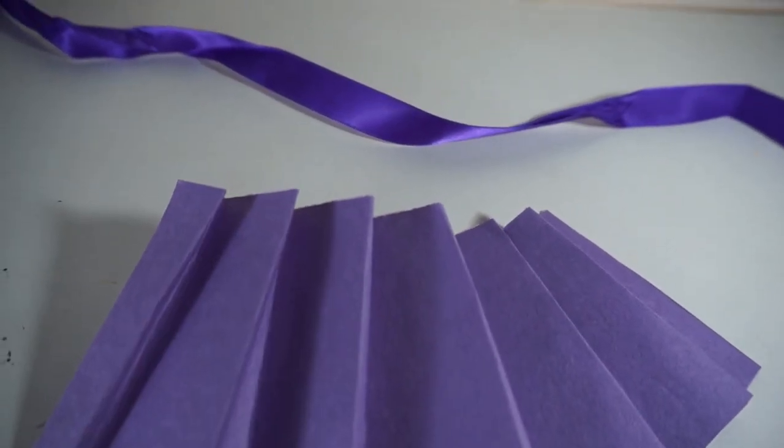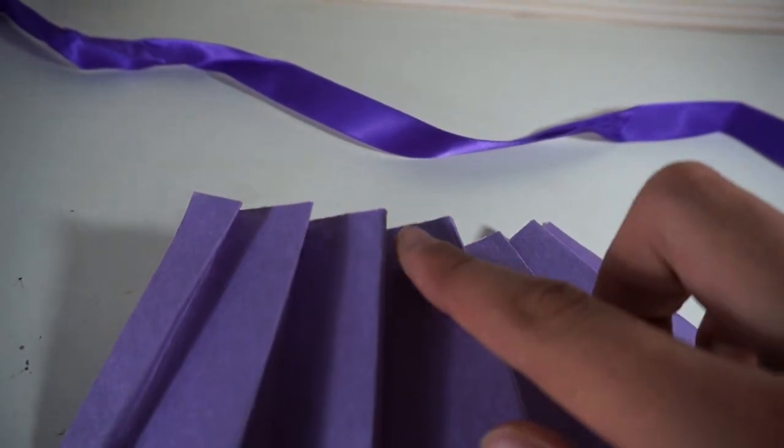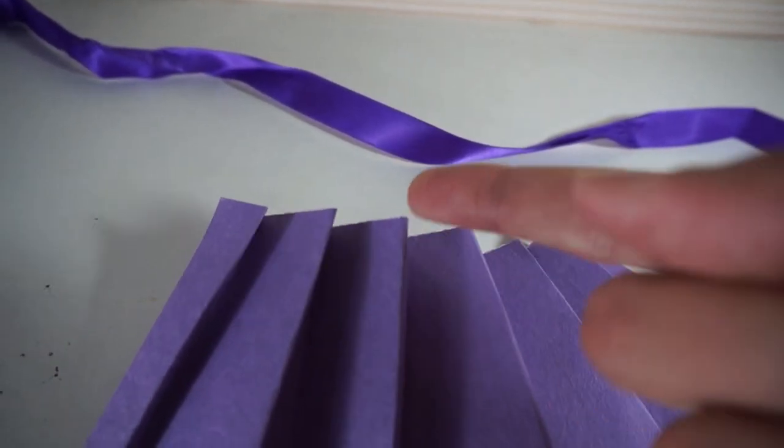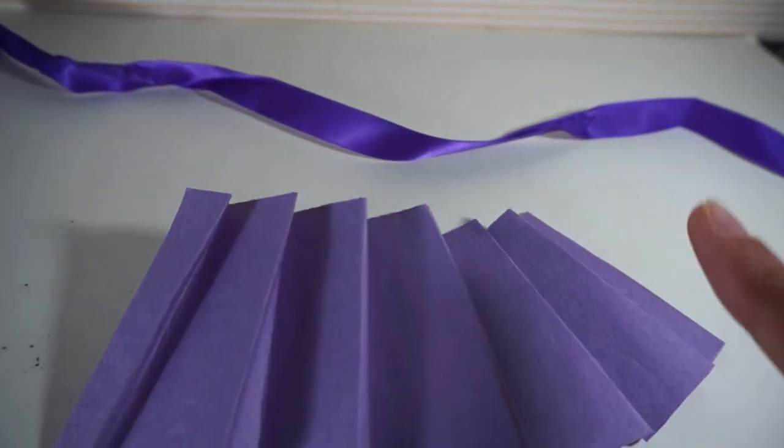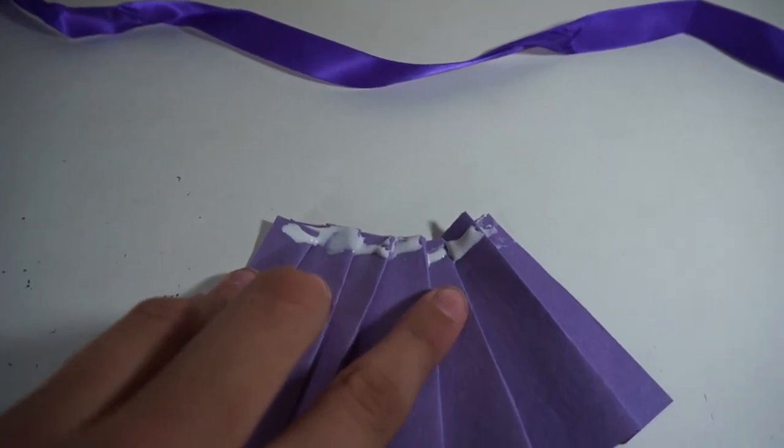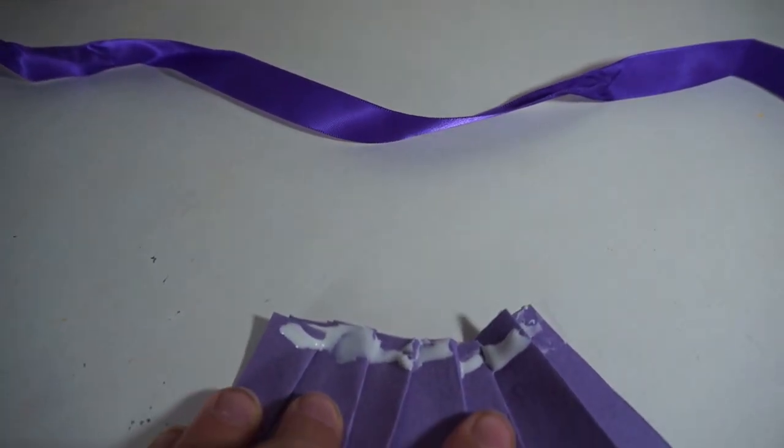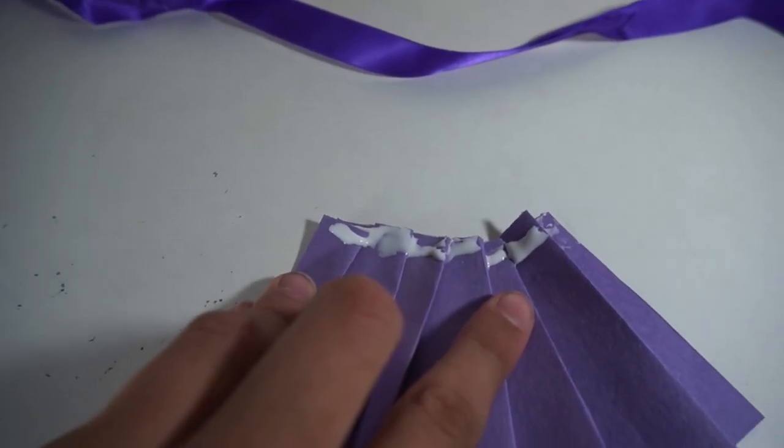If you're afraid that your dress is going to fall apart or you're going to be using it a lot, I would suggest putting a little drop of glue in between each of the slits so that it is a little bit more secure. Okay all glue is applied, now I'm just going to place the ribbon on top and hold it to dry.